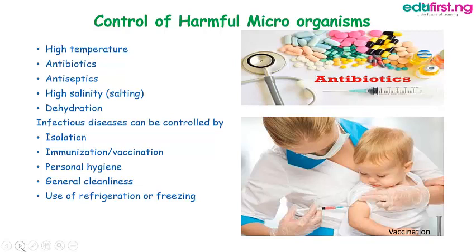2. Antibiotics. Antibiotics are used to kill germs. Examples include Ampiclox and Ampicillin. 3. Antiseptics. These are chemicals that kill or prevent the multiplication of microorganisms. Examples include Dato, chlorine water, and medicated soap.